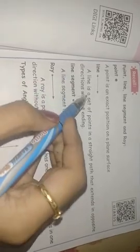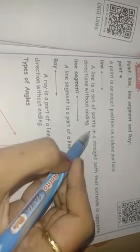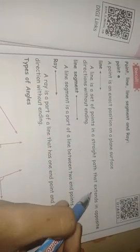Line is a set of points in a straight path that extends in the opposite direction without ending. That is not any ending. Let's go to line segment.